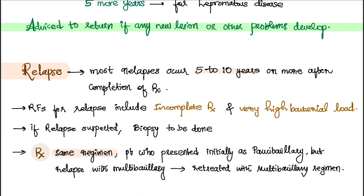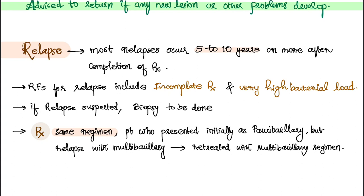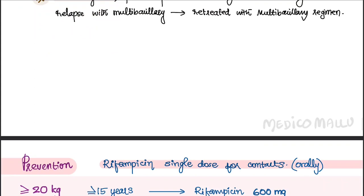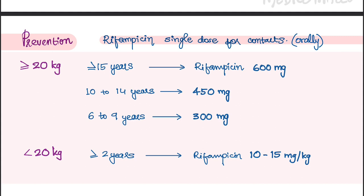Relapses usually occur around five to ten years or even more after completion of treatment. Risk factors for relapse include incomplete treatment or very high bacterial load. If relapse is suspected, a biopsy is needed. The treatment for relapse is the same regimen — for example, if a patient initially had paucibacillary disease but relapses as multibacillary, the multibacillary regimen of 12 months should be given.